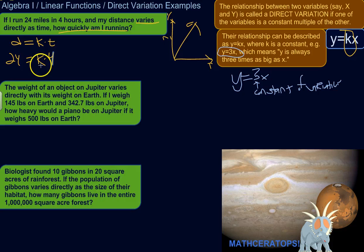So I run 24 miles in 4 hours. So my distance is 24 miles when 4 hours have passed. So 24 is some constant times 4 hours. We're just plugging in what we know. All right, so I can solve for k. What times 4 is 24? So k would be 6.